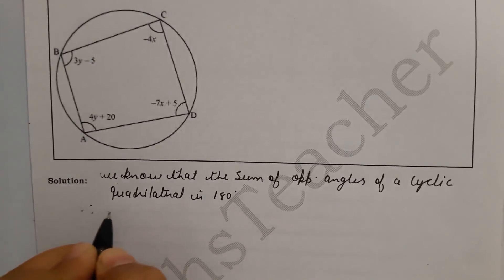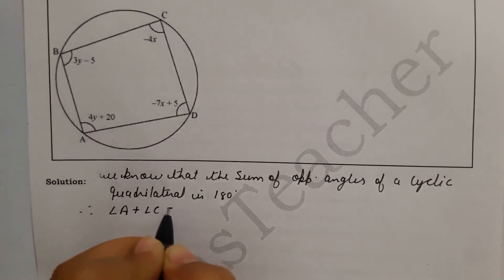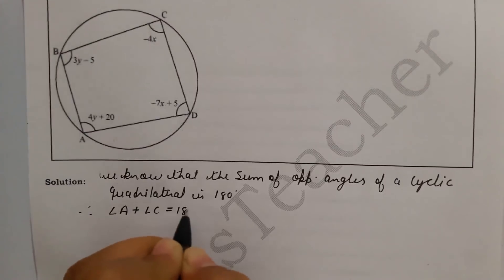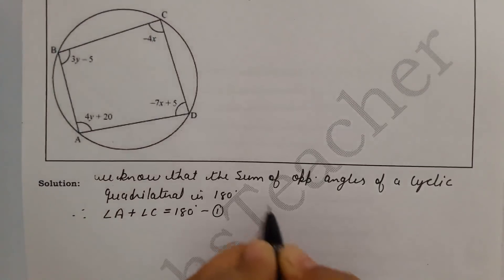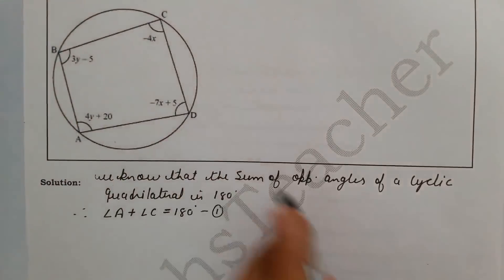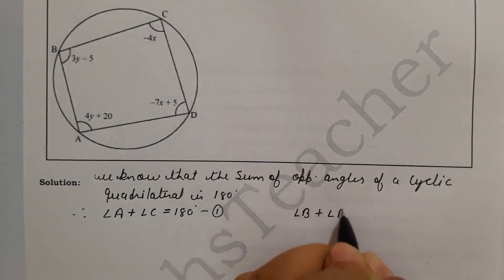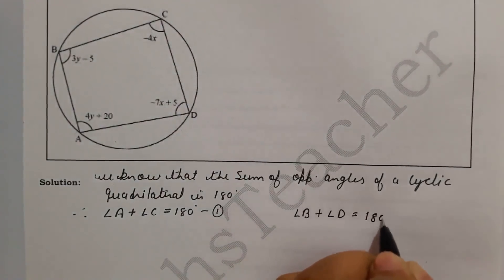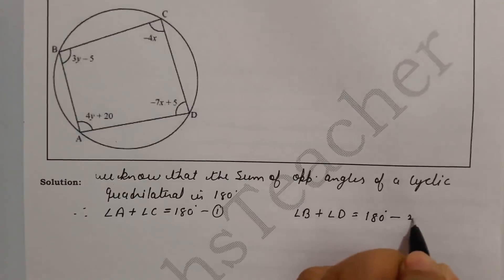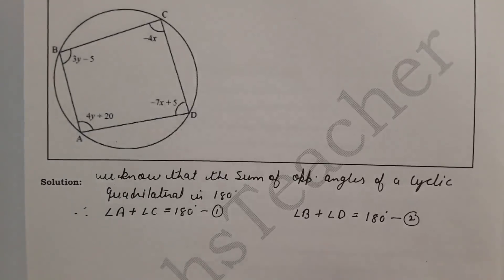Therefore, angle A plus angle C equals 180° — this is equation 1. And angle B plus angle D equals 180° — this is equation 2. We will substitute the given values into these two equations and solve them to find the values of x and y.